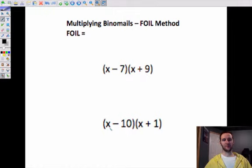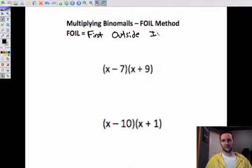This next part gets a little bit more complicated. This is what's called the FOIL method. FOIL stands for first, outside, inside, and last. And those are all the different things that you're going to do when you multiply two polynomials together.